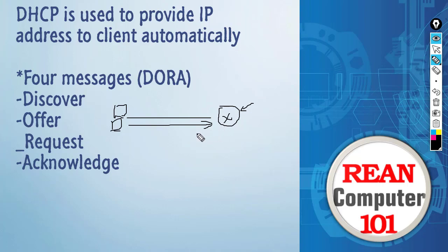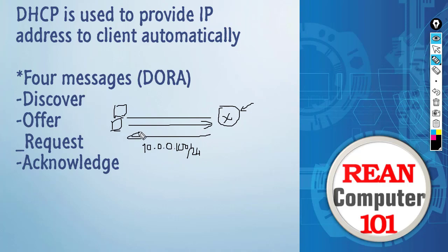The router is going to reply back with an Offer to the client. The DHCP Offer is going to contain the IP address of the host from the DHCP pool, along with the default gateway and other information. The message means: hey, I am the DHCP server, and here is the IP address I can offer you. If you like it, just tell me back.